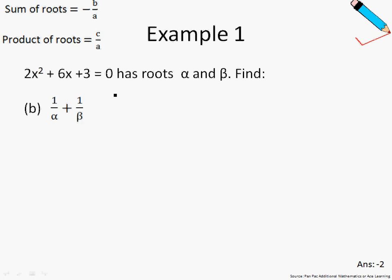In example 1b, we have a similar equation, so I will not show you how to find your sum and product. I'll just write them out, because it's the same as what we solved earlier. So my sum of roots is just -3, and my product of roots is just 3/2, similar to the previous example.